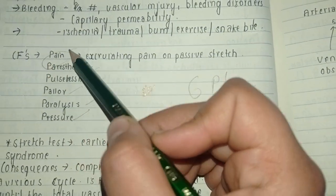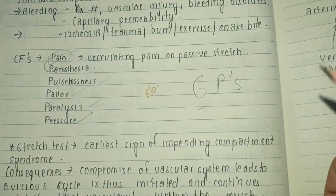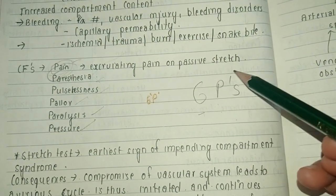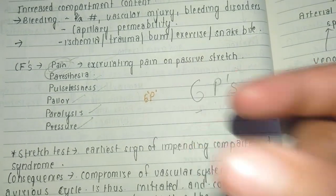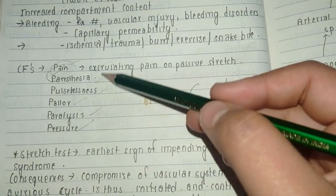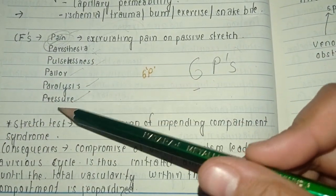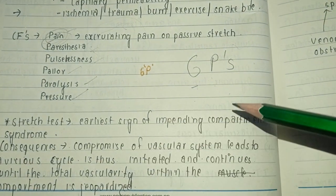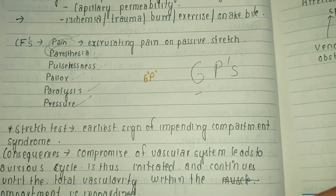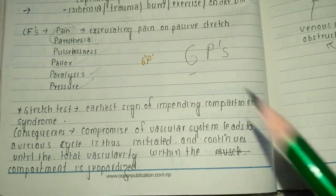For the clinical features, we have to remember the six P's: pain, paresthesia, pulselessness, pallor, paralysis, and pressure. Pain is the most important clinical feature — excruciating pain on passive stretch. When the examiner stretches the limb with compartment syndrome, there is very severe pain. This is the stretch test, which is the earliest sign of impending compartment syndrome.